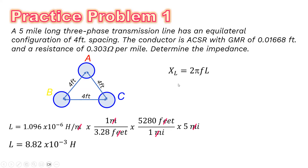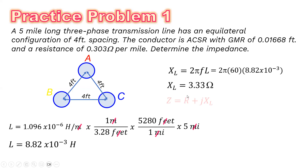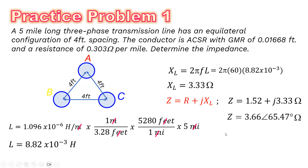The inductive reactance X_L = 2πfL = 2π × 60 × 8.82 × 10⁻³ = 3.33 ohms. Therefore, the impedance Z = R + jX_L = 1.52 + j3.33 ohms in rectangular form, which converts to 3.66 ∠ 65.47° ohms in polar form.